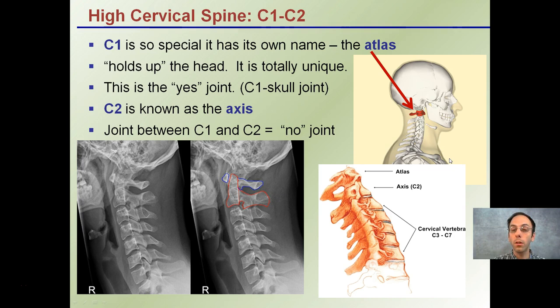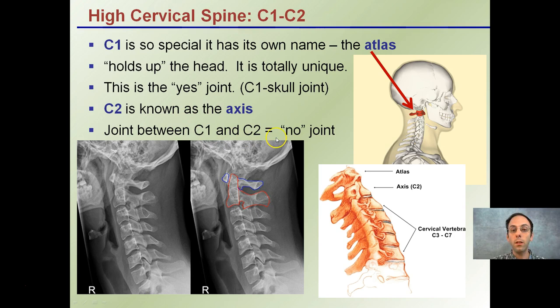Two special vertebrae are C1 and C2. C1 has its own name — the Atlas — and it's the very first one at the top. It holds the head up and is considered the yes joint, so when you're making a yes movement, that's because of C1. C2, directly below, is called the Axis, and the joint between C1 and C2 is called the no joint, responsible for the rotating side-to-side motion. Remember: C1 is the Atlas responsible for yes, and C2 is the Axis responsible for no.